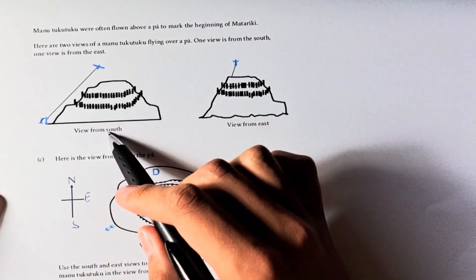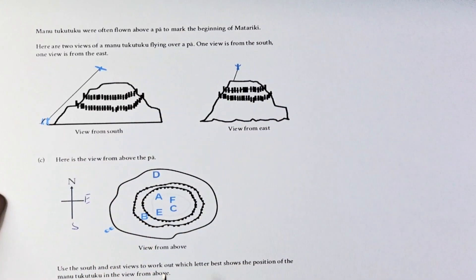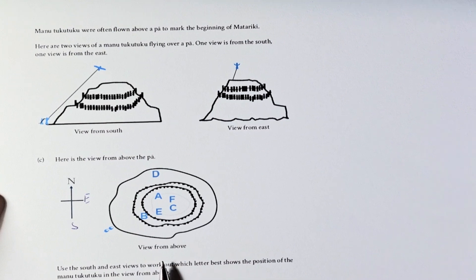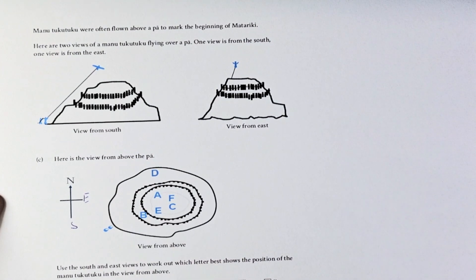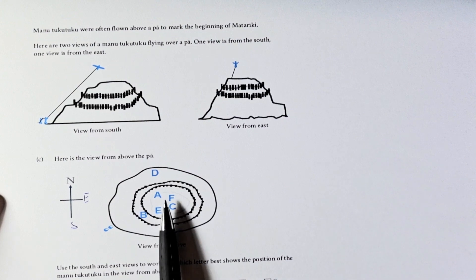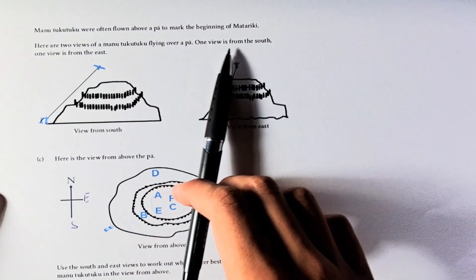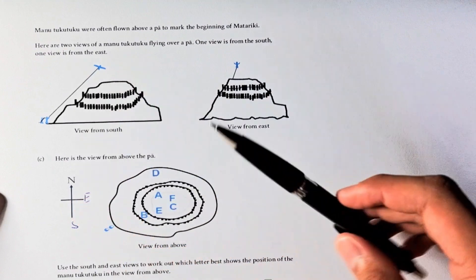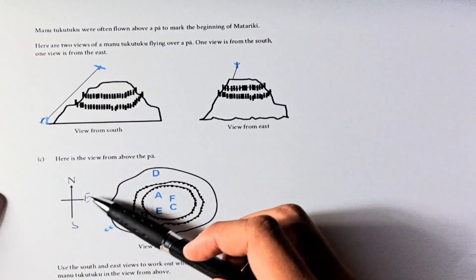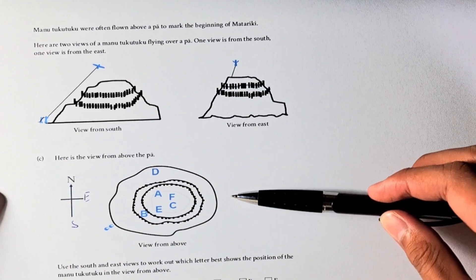One view is from the south, and one view is from the east. Here we have the view from the south. We are actually looking at it as though we are on the ground looking this way. This is the bird's eye view. South of this hill would be here. We are looking at the hill in that direction. One view is looking from the east.